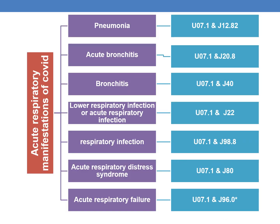Let us discuss the acute respiratory manifestations of COVID. COVID infection might lead to other manifestations such as pneumonia, acute bronchitis, bronchitis NOS, lower respiratory tract infection, and acute respiratory failure. The appropriate codes are: for pneumonia — U07.1 and J12.82; for acute bronchitis — U07.1 and J20.8; for bronchitis NOS — U07.1 and J40; for lower respiratory infection or acute respiratory infection — U07.1 and J22.